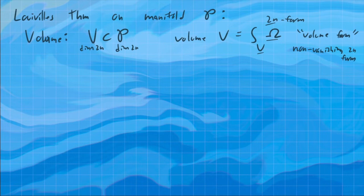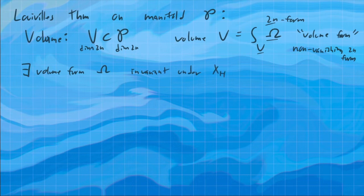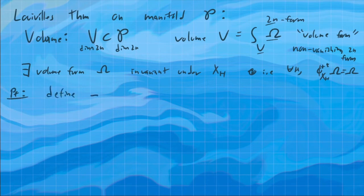All right, so by integrating with respect to this, we can find a volume of sub-manifolds. So Liouville's theorem says that there exists a volume form which is invariant under XH, the flow, the Hamiltonian flow, the evolution under phase space. Or in other words, i.e., for all H, we have that the pullback of the flow of this 2n form is just itself. And proof. Here, define omega equals omega to the n over n factorial, where this is just 1 over n factorial of omega wedge dot dot dot wedge omega.